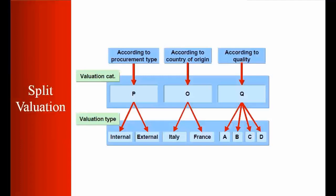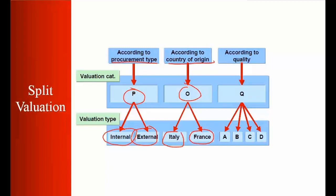Looking at the picture, you can see different ways to distinguish a material according to different criteria. The first is P — procurement type. If the procurement is internal or external, meaning if we manufacture the same material in-house or buy it from an external vendor, we can differentiate that material on a valuation basis. Or it can be O — country of origin. For example, buying the same material from Italy versus France, we want to differentiate the stock value. The third is Q — quality. When we manufacture or buy a product from an external vendor, it can have different qualities: A, B, C, or D.